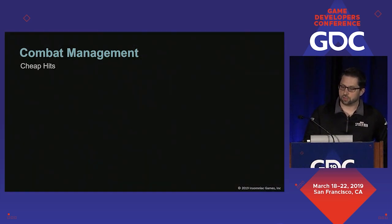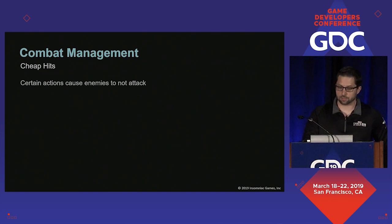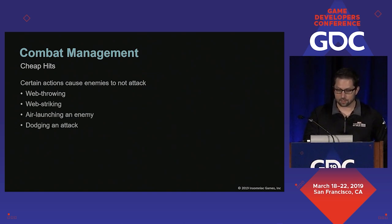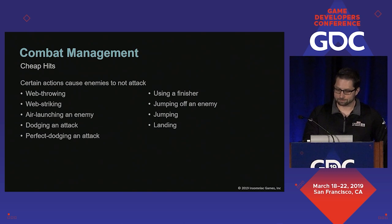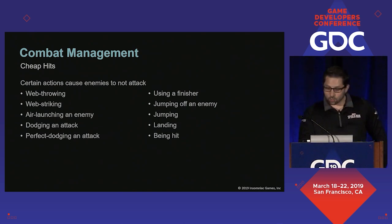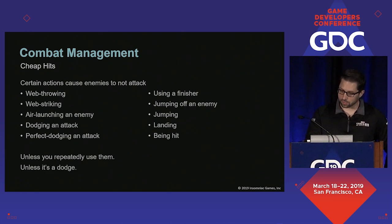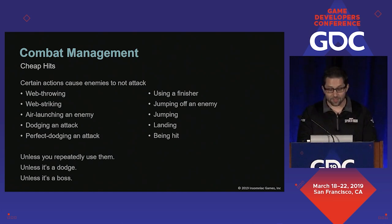Even after all of this iteration, players still felt that there were times when being attacked was cheap. So we made a list — performing any action from this list would cause the managers to cancel all attack jobs that hadn't actually started the attack. Web throwing an environmental interactable, web striking a new target, using an air launcher on a target, dodging an attack, perfect dodging an attack, using a finisher, jumping off an enemy, jumping, landing, being hit — in all of these cases we'd cancel incoming attacks. Unless you abused the action repeatedly, and then we'd allow the attack jobs to persist. Unless that action was a dodge, in which case we'd still cancel the jobs. Unless it was a boss fight, and then the jobs wouldn't be canceled.